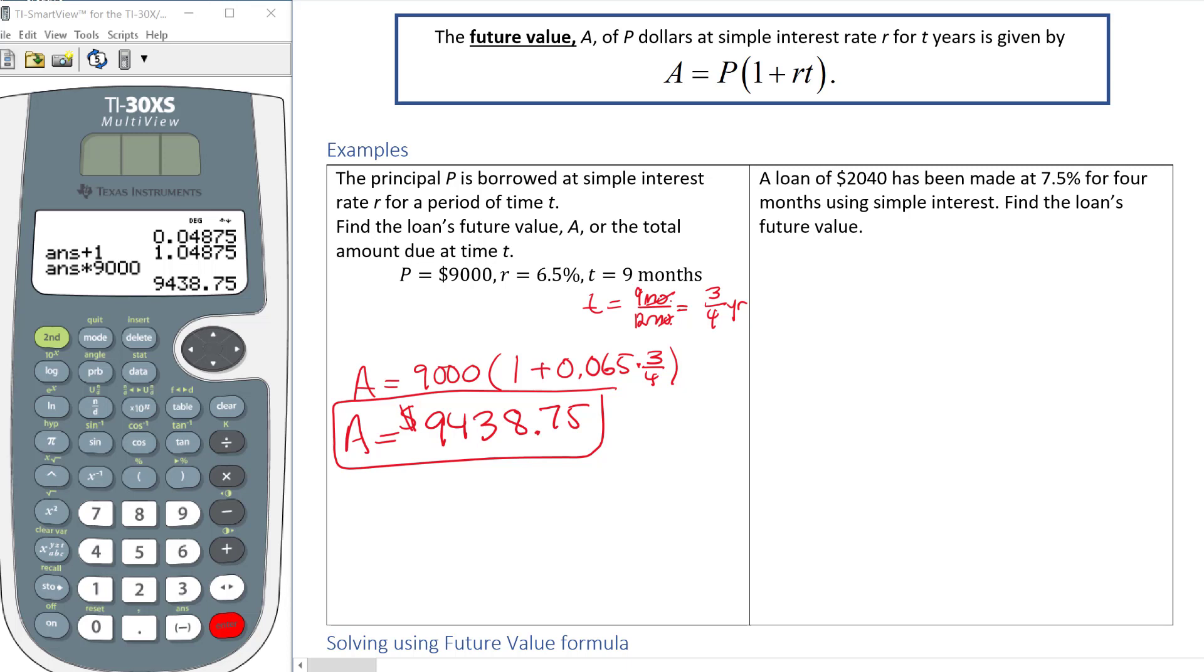One more example here: a loan of $2040 has been made at 7.5% interest for four months using simple interest.